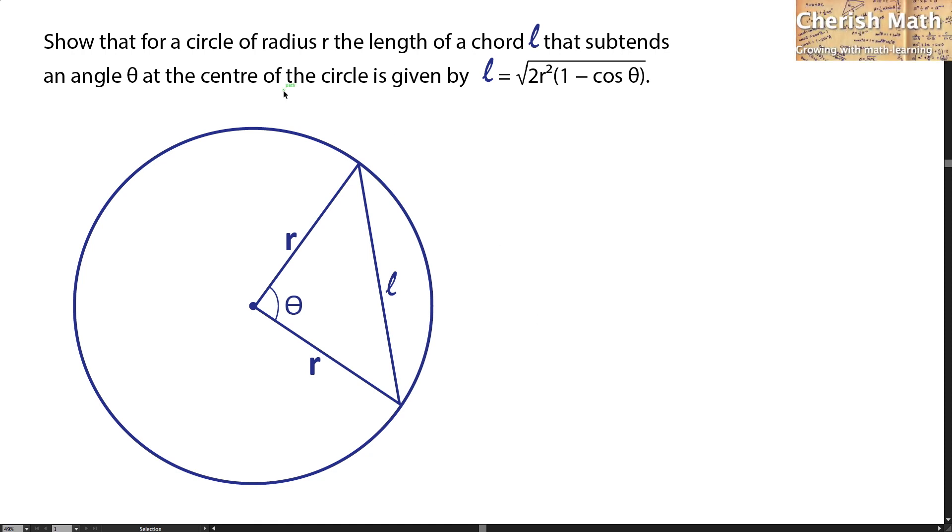Hi from Challenge Math. Here is the question. Show that for a circle of radius r, the length of a chord l that subtends an angle θ at the center of the circle is given by l = √(2r²(1 - cos θ)).